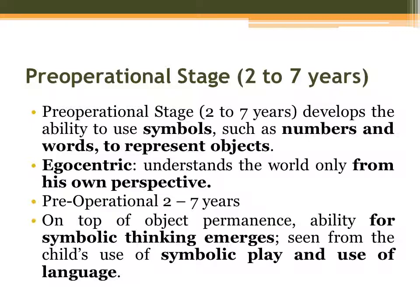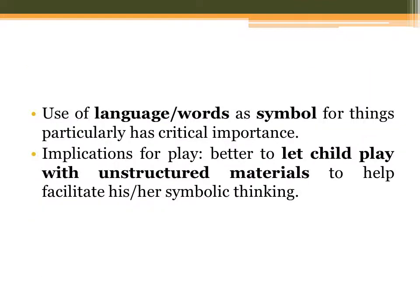Pre-operational is two to seven years old. On top of object permanence, the ability for symbolic thinking emerges, seen in the child's use of symbolic play and language. The child will start to use symbols — numbers and words — and also start playing in a symbolic way, such as using toy cars and other objects. Use of words as symbols for things has critical importance at this stage.